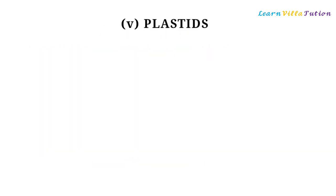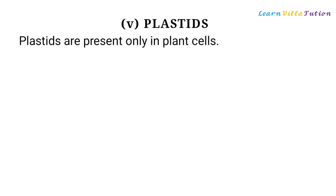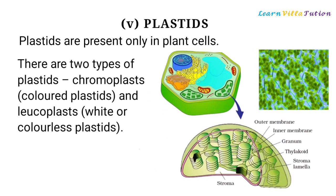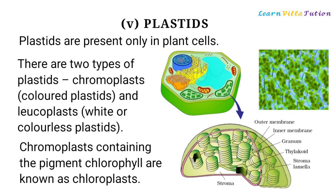Plastids are present only in plant cells. There are two types of plastids: Chromoplasts, which are colored plastids, and Leukoplasts, which are white or colorless plastids. Chromoplasts containing the pigment chlorophyll are known as chloroplasts.